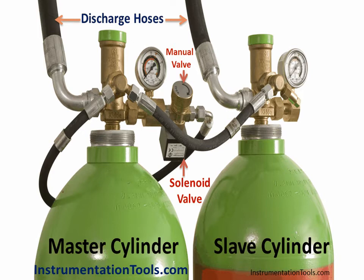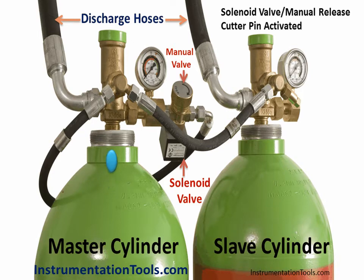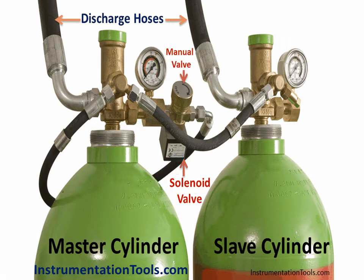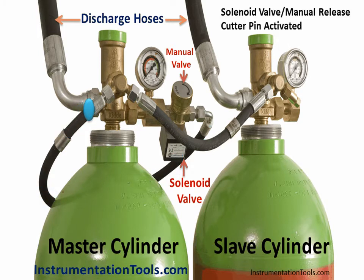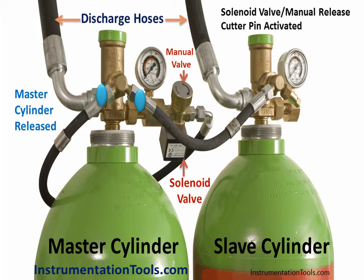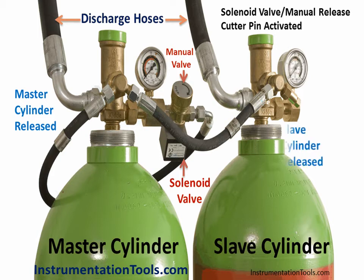Master cylinder consists of a solenoid valve for remote auto activation, and a manual valve or manual release cutter pin for manual activation. Manual activation will be useful in case auto operation fails. If you observe the animation, the master cylinder has one extra tube or pipe connected with the manual valve and solenoid valve.